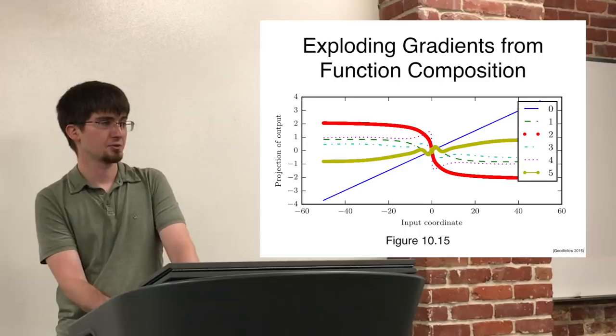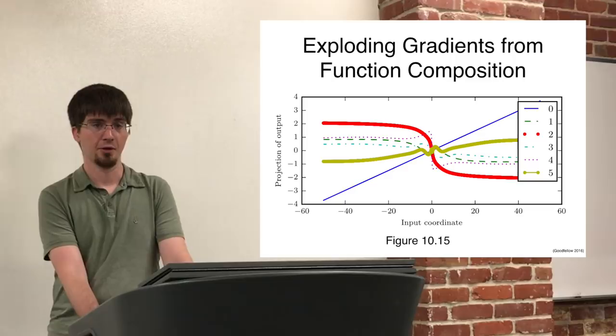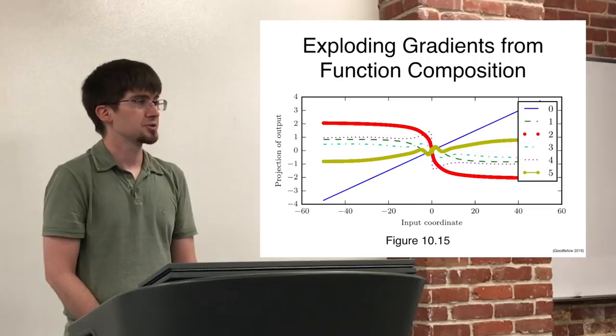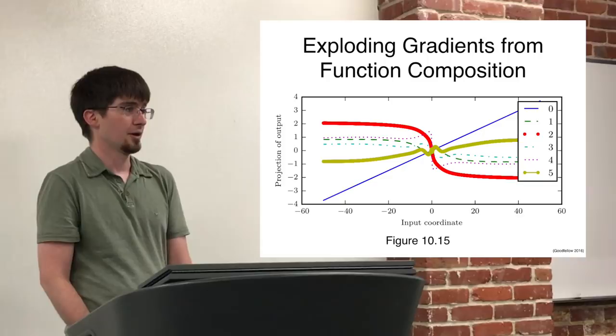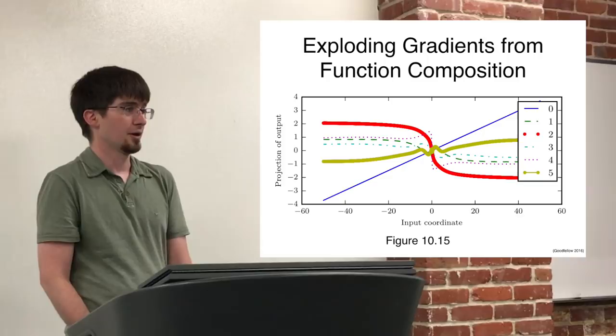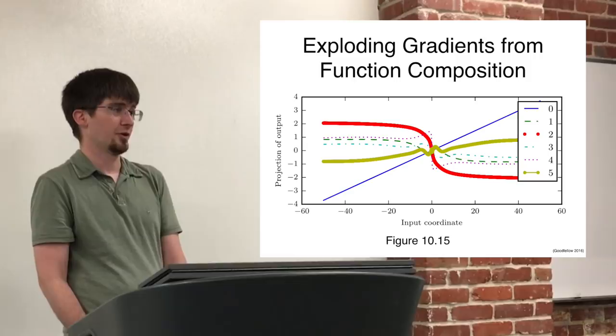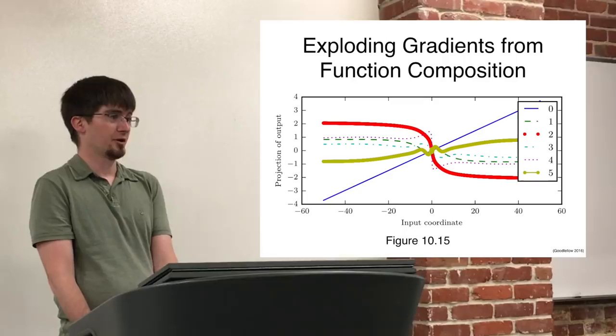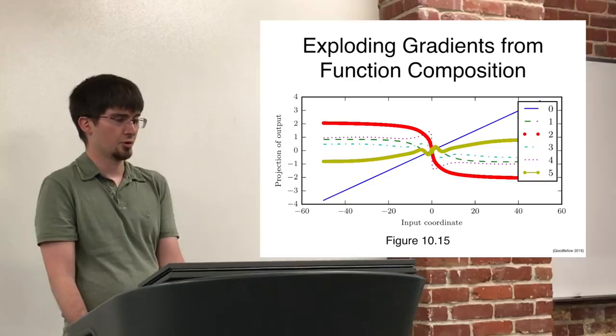Responding to a question about whether feedforward nets with multiple layers have the same problem: there's a good analysis by David Sussillo on the brain team called random walk initialization. When you have multiple layers, you have a different value of w at every layer, and w is randomly sampled. On some layers you'll get a number larger than one, on others smaller than one, and when you multiply them together they kind of cancel out on average. It turns out you will gradually move away from the value you start at, but it'll be proportional to the square root rather than an exponent, and it's relatively easy to keep under control. So feedforward nets don't seem to have this problem nearly as much.